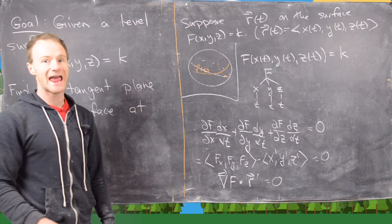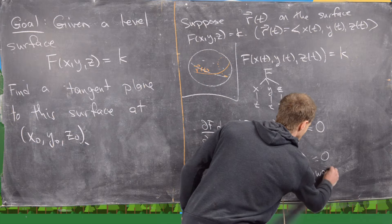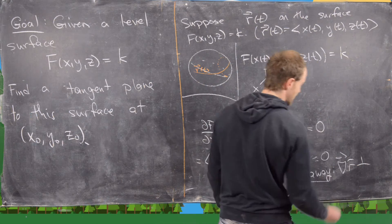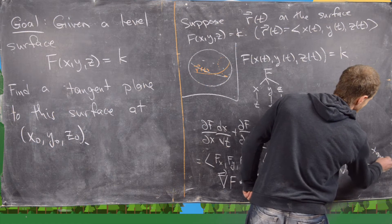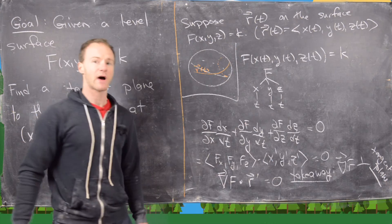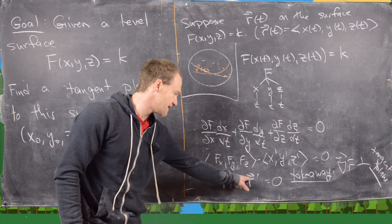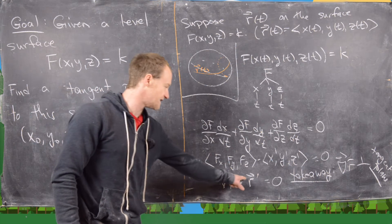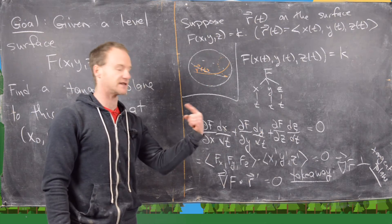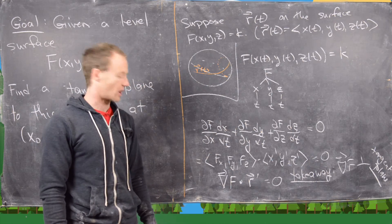And now let's look at the takeaway of this. So the takeaway is that the gradient of f is perpendicular to the tangent plane. So how do we know that? Well look, the gradient of f is perpendicular to every tangent vector. We see that because r prime gives us a tangent vector,